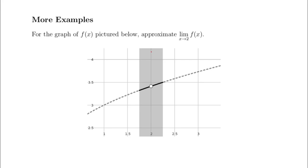Here are a couple more examples — pause the video and think about these; the little bars are already set up. Here's one — see if we can figure out what this limit is going to be. This is a really good one because it shows why we're just approximating. Hopefully what you're seeing is that the left-sided limit looks like it's approaching a certain y value, and the right-sided limit looks like it's approaching the same thing. I'm pretty sure the limit exists, but it's hard for me to tell exactly what it is — maybe approximately 3.4-ish.